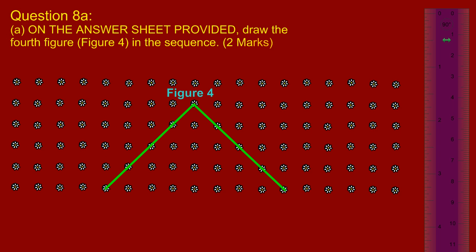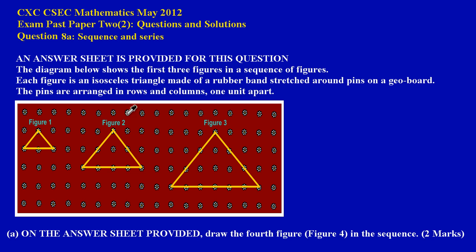Now let's quickly shift back boards to see how long the base should be. Here we have, on figure one, base is three pins. Figure two base is five pins. And figure three base is seven pins. So notice for each figure I move to, the base is increasing by two.